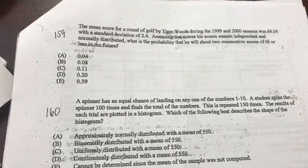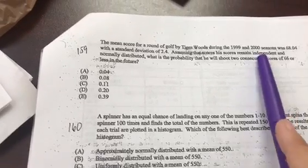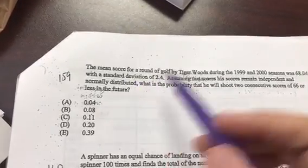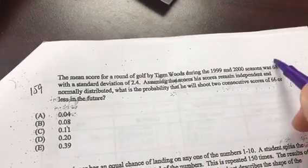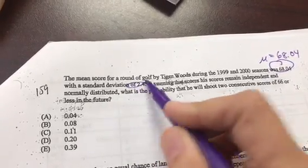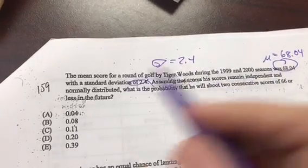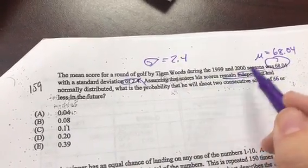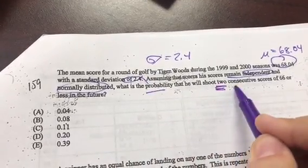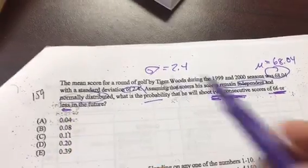The mean score for a round of golf of Tiger Woods during the 1999 and 2000 season was 68.04 with a standard deviation of 2.4. Assuming these were independent and normally distributed, what's the probability of shooting two consecutive scores of 66 or less?